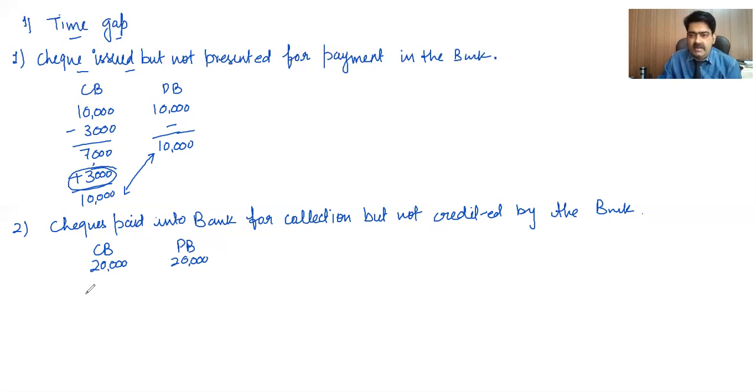So our entry will be bank account debit to XYZ. So as soon as we will write that check in our cash book, our cash book balance will increase by that amount that is 5000 and it will be 25,000 rupees.